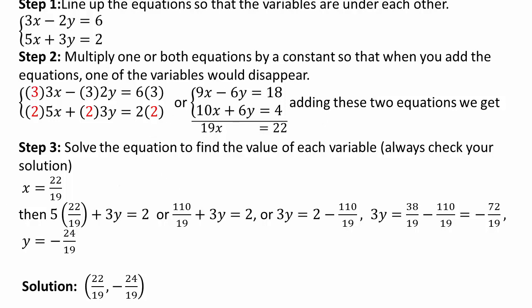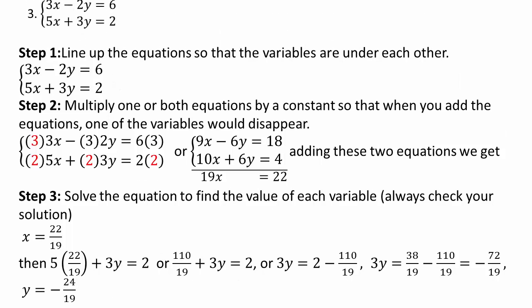It depends on the context and the equations you have to decide which method to use. To recap the elimination method: line up the x's and y's, multiply one or both equations by a constant so that when you add them one variable is eliminated — that's why it's called the elimination method. Find x, then find y, and that gives you your solution. You can always go back and verify that the point satisfies both equations.